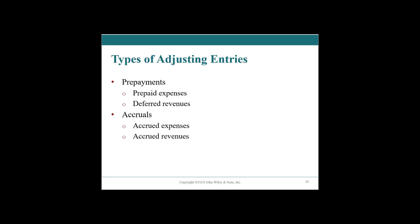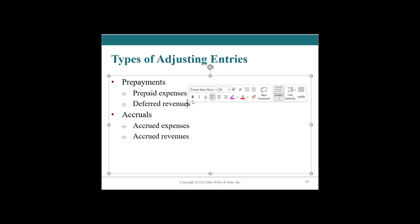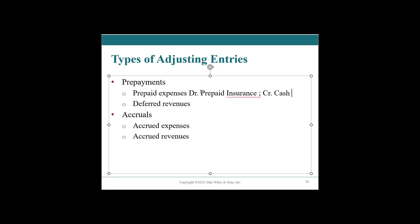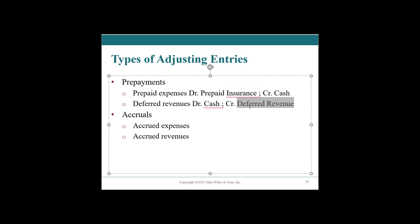In general, there are four different types of adjusting entries. The first broad category is prepayments, which includes prepaid expenses and deferred revenues. Prepaid expenses — like insurance — involve debiting prepaid insurance and crediting cash, meaning we paid in advance for the year. Deferred revenue is like Shania Twain or Billie Eilish receiving cash from ticket sales and crediting deferred revenue — a liability saying 'I have your cash and I owe you a concert.'